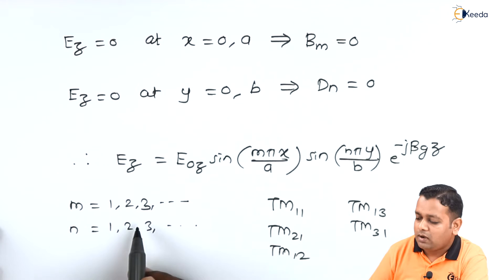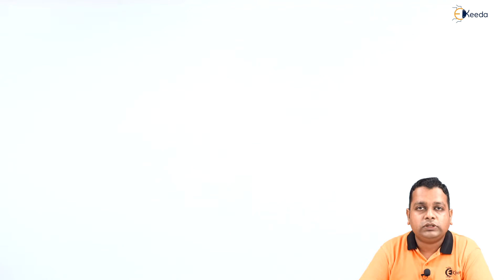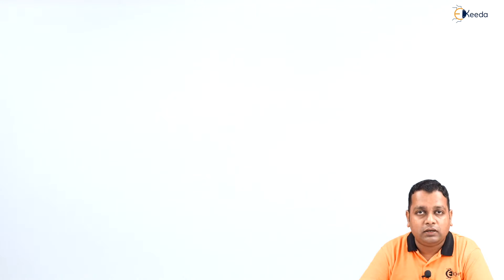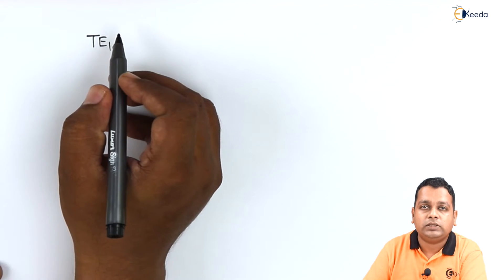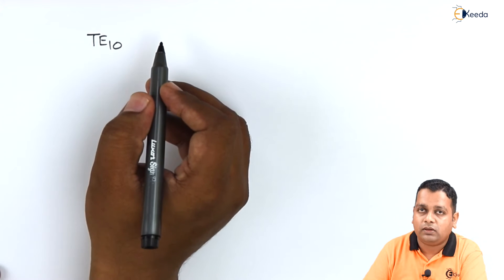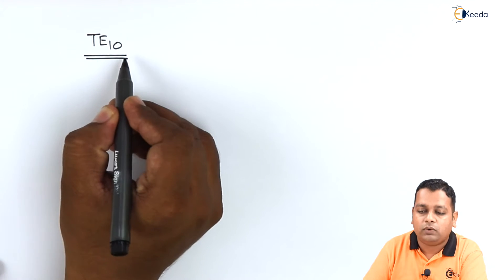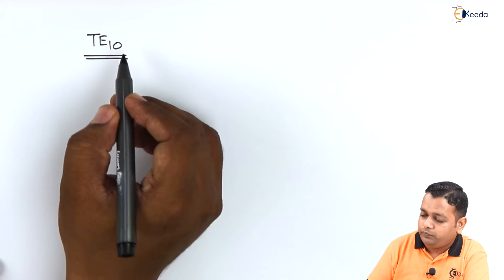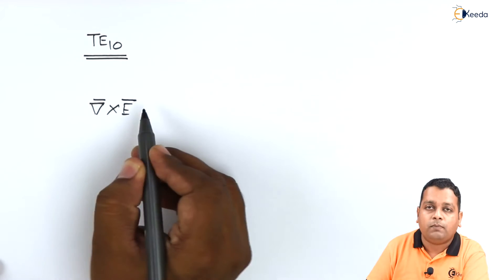When all the possibilities are checked, it is found that TM01 and TM10 do not exist. This leads to the dominant mode of wave propagation inside the rectangular waveguide being the TE10 mode, giving the highest value of cutoff wavelength, or equivalently the smallest cutoff frequency. This has already been covered in one of our previous videos.